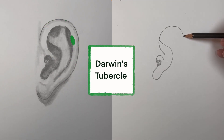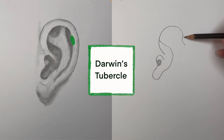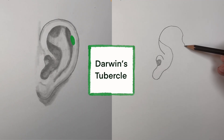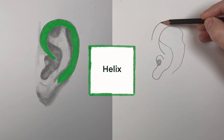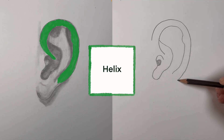Some people have a little bump here, it's called Darwin's tubercle. Tuber means lump, and cule means small, so small bump. It's possibly a remnant of a pointer ear shape in an ancestral primate. I'll keep drawing the inside of that helix line, and then I'll draw the outside of the helix line, up until about here.